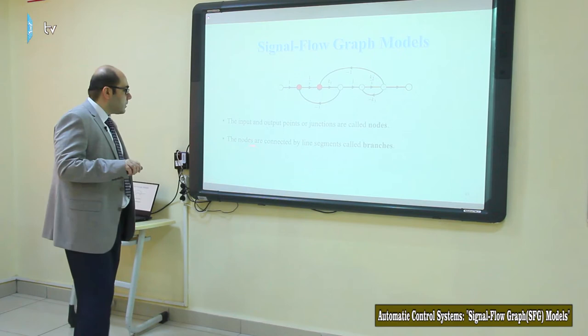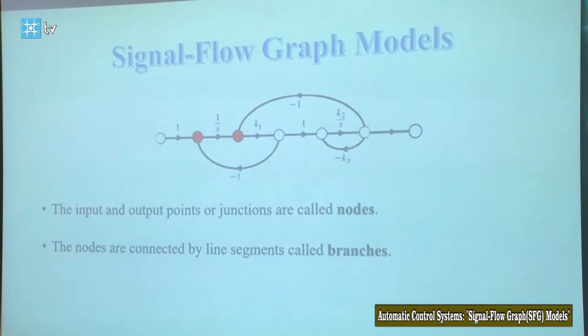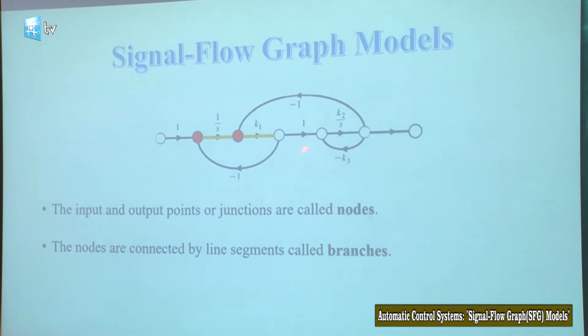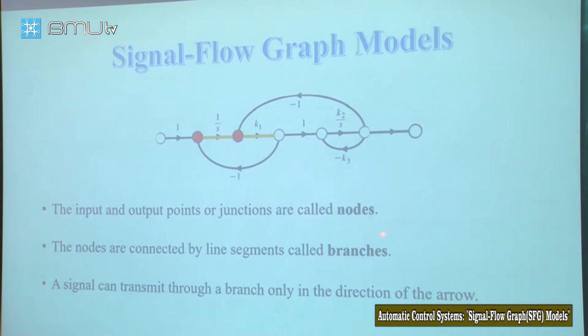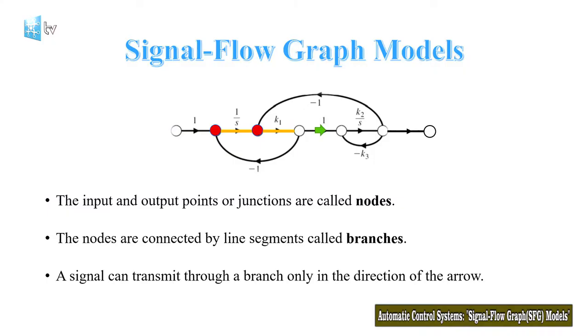The second term is branch. The nodes are connected by line segments called branches. A signal can transmit through a branch only in the direction of the arrow — please notice this carefully. In this direction, and for this branch the signal will transmit through this direction.